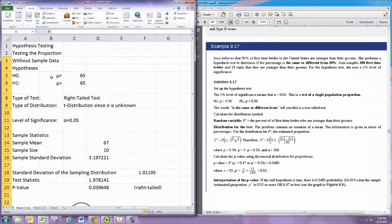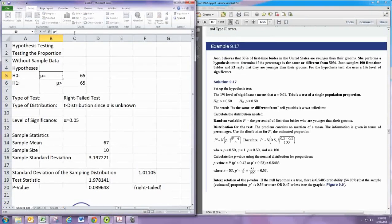You do want to start with our hypotheses. Here you can tell with all these percentages we're testing the proportion, so we want a p in the hypothesis statements. And you can read the line. It says that June believes that 50% of the first time brides in the United States are younger than their grooms. She performs a hypothesis test to determine if the percentage is the same or different from 50%.